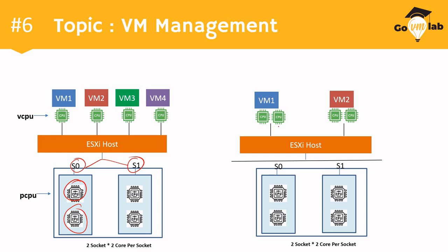Now in scenario number two, we also have an ESXi host running two VMs — VM1 and VM2 — each configured with two vCPUs. The physical CPU configuration is again two sockets and two cores per socket, the same as scenario one. So that is scenario number two — pretty easy and straightforward.